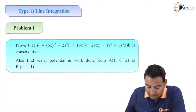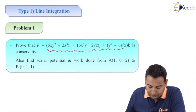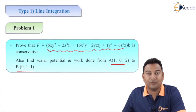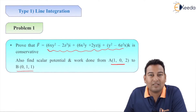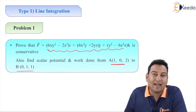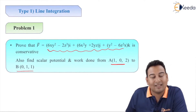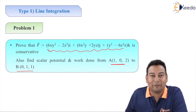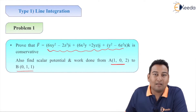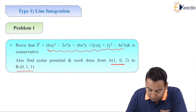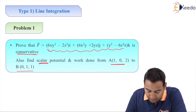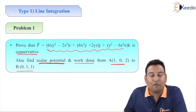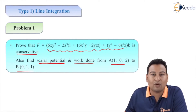The given problem: prove that F̄ is conservative, find the scalar potential, and find the work done from point A to B. This type of problem appears in at least seven to eight out of ten exam papers, generally for six marks. The problem is divided into three parts — two marks each: prove conservative, find scalar potential, and find work done.